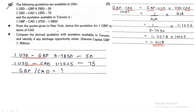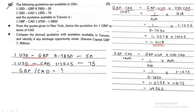Similarly, we need to find GBP to CAD ask rate. Again same order: GBP at the start, CAD at the end, multiply with the common. GBP to USD is in the opposite direction, so it becomes 1 upon bid. USD to CAD is in the same direction, so it will be directly ask. You divide and multiply, and you will get your final answer. So GBP to CAD bid and ask are done.